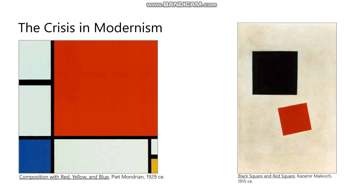I want to talk a little bit about the difference between the word abstraction and non-objective, because a lot of students get confused about this. There's a difference between abstraction — like this Mondrian piece — versus non-objective — like this Malevich piece. They may look very similar to each other, but they are fundamentally different. When we say abstract art, we usually mean artwork that we don't quite understand what it's about, but that's not what abstract art means. It means that it has been abstracted, as you might remember from our lecture on high modernism.